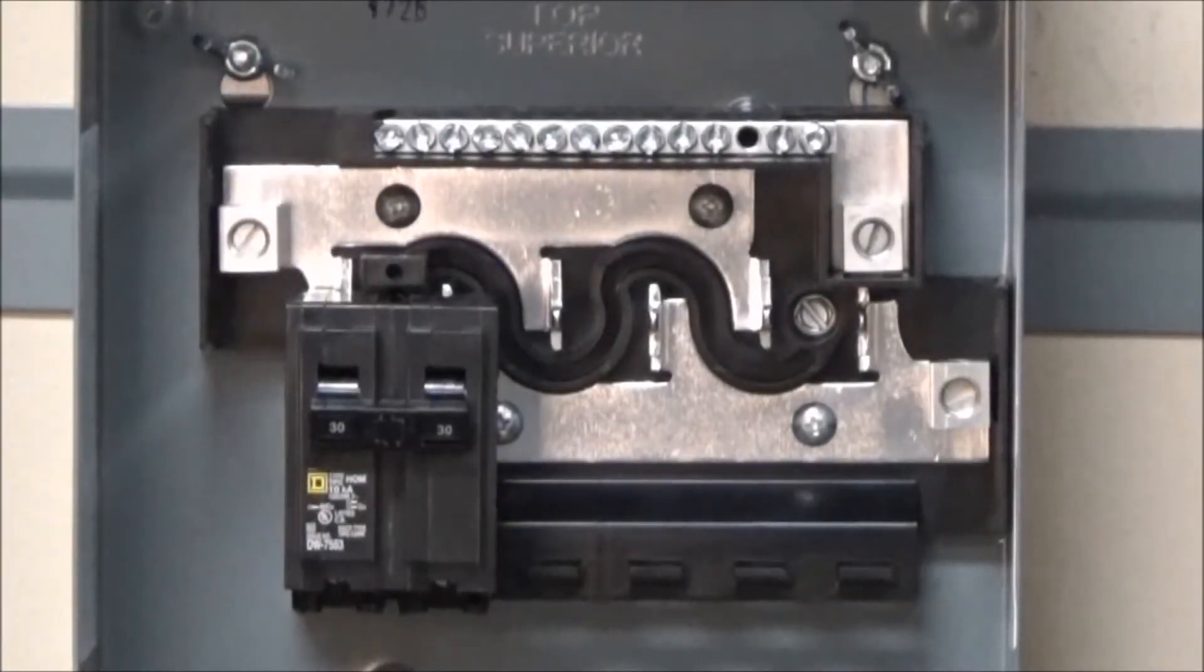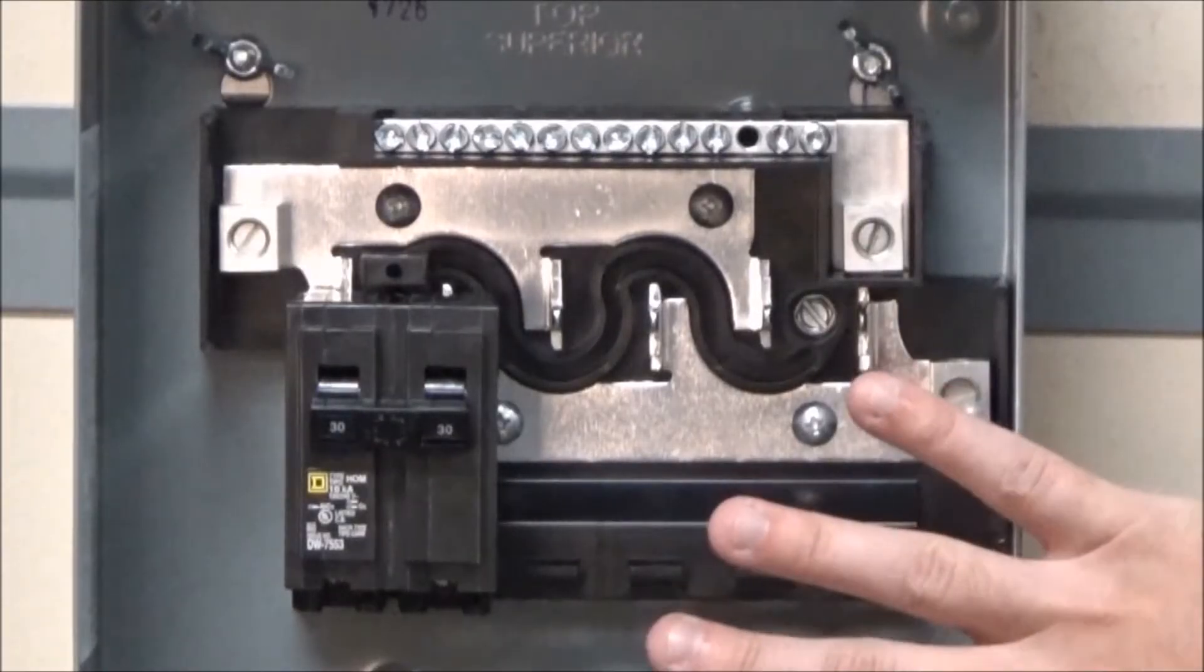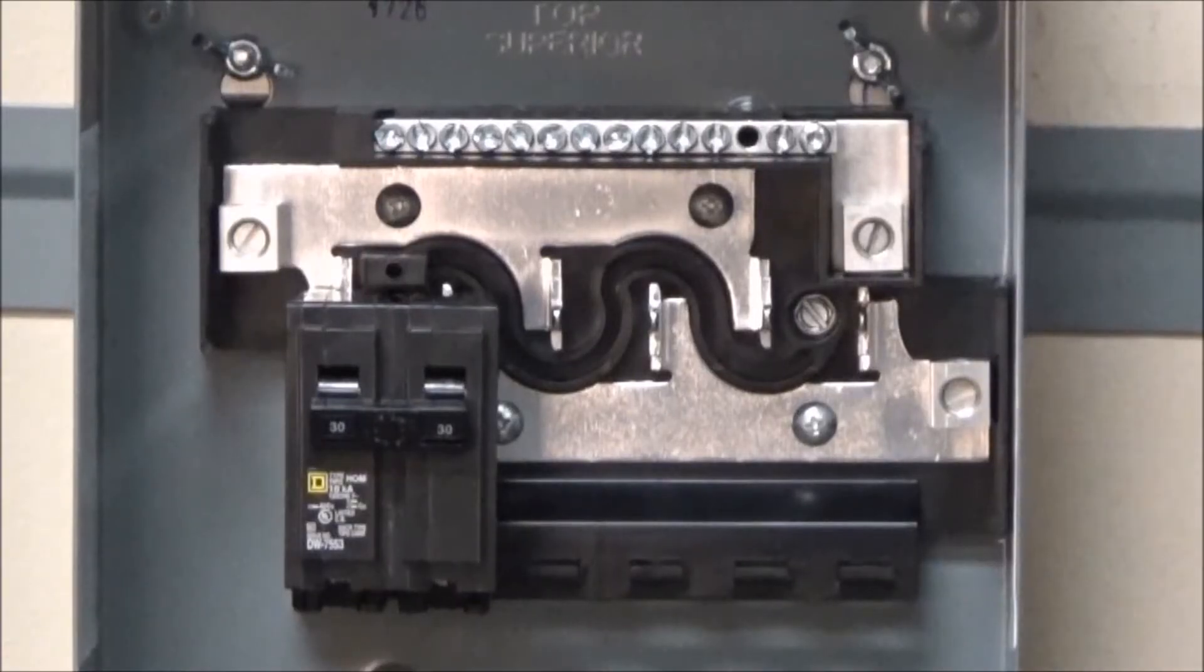Due to the 2017 NEC code change requiring service barrier kits, four space and six space home line load centers, such as the one shown here, made after January of 2017, must be used.